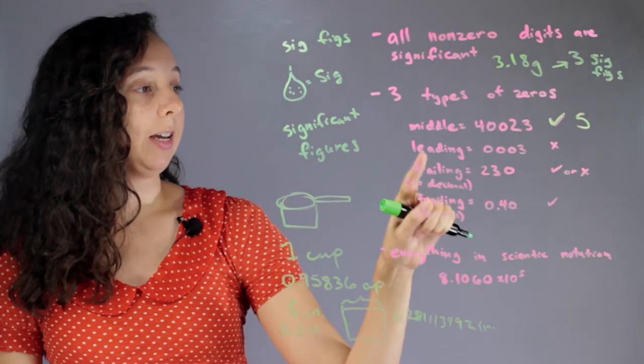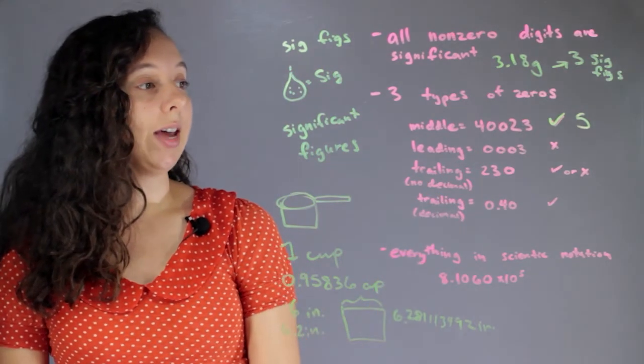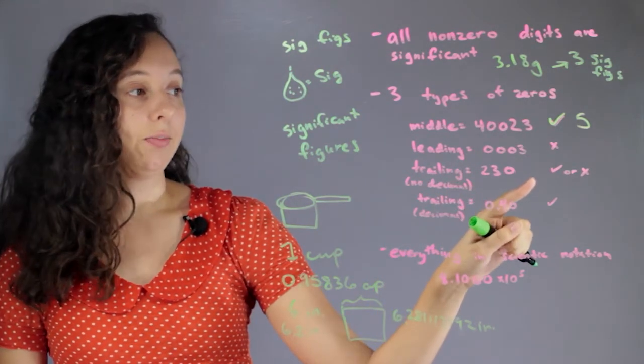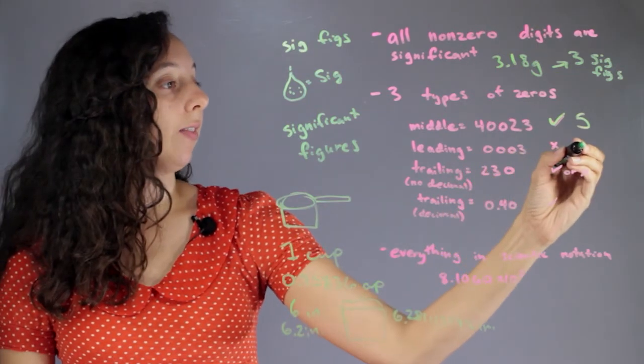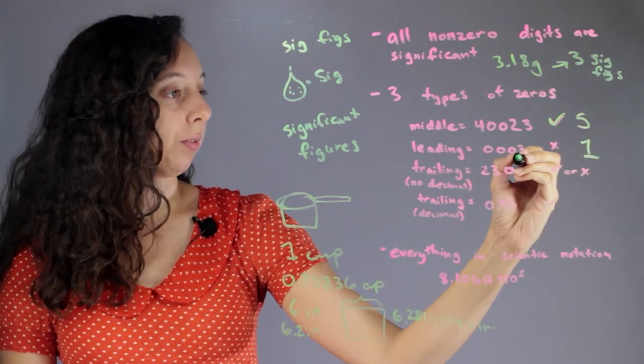And the next type is leading, and so these never count. So leading zeros, this still just has 1 sig fig. This 3 right here.